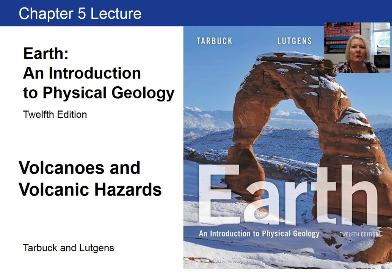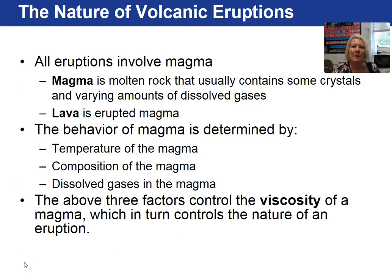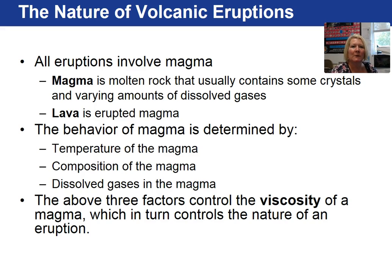Today I'm starting my lecture on Chapter 5, Volcanoes and Volcanic Hazards. This is Lecture number 1. Magma is a term used to describe molten rock that contains some crystals and various amounts of dissolved gases. When magma reaches the Earth's surface — for instance, out of a volcano — we refer to that material as lava.